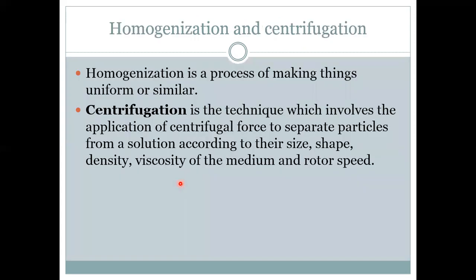Cell fractionation has two steps: homogenization and centrifugation. Homogenization is a process of making things uniform or similar. Centrifugation is the technique which involves the application of centrifugal force to separate particles from a solution according to their size, shape, density, viscosity of the medium, and rotor speed — meaning the speed of the machine called the centrifuge.